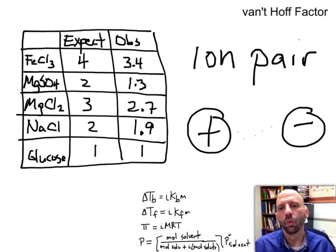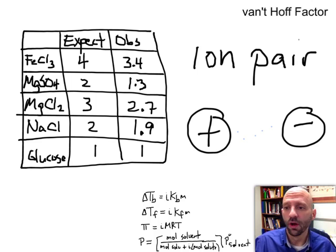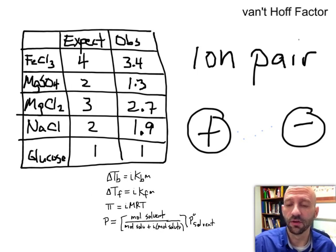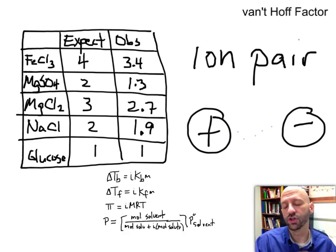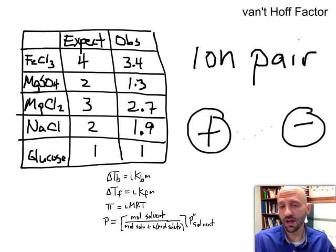Alright, so we now have the reformulated colligative property equations. So, the ones down here at the bottom that I started the video with, these guys down here, these are really the equations you should work with. Now, if you don't have an ionic solute, you just put in a one for the van't Hoff factor. But, if you do have an ionic solute, these equations help you figure that out. Now, they do have a limitation.